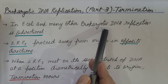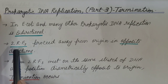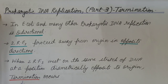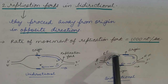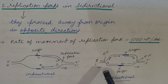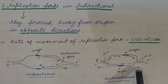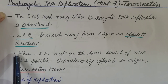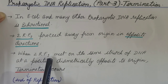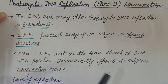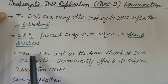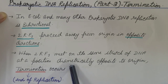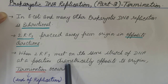In E. coli and many other prokaryotes, DNA replication is bidirectional. Two replication forks proceed away from the origin in opposite directions. This is the origin of replication and this is the replication bubble. There are two replication forks which proceed away from the origin in opposite directions — this is the bidirectional mode of DNA replication. As these two replication forks proceed in opposite directions, a region comes where the two replication forks meet, and termination occurs.